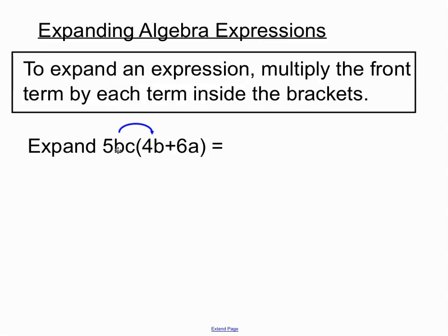Now 5bc times 4b. The numbers multiply normally, so 5 times 4 will be 20. And you'll notice that we have a b times a b, so that's why we've made that b squared there.